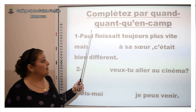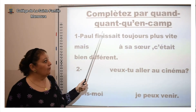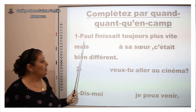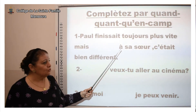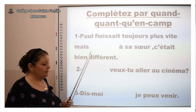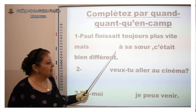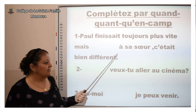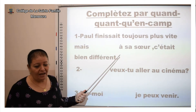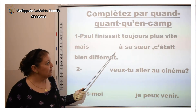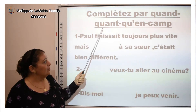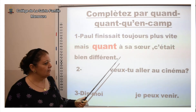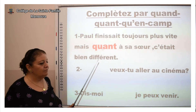Exercice : complétez par « quand », « quant », « qu'en » ou « camp ». « Paul finissait toujours plus vite. Mais … à sa sœur, c'était bien différent. » Il y a ici la préposition « à », alors il faut mettre « quant » avec T. Voilà : « Quant à sa sœur, c'était bien différent. »